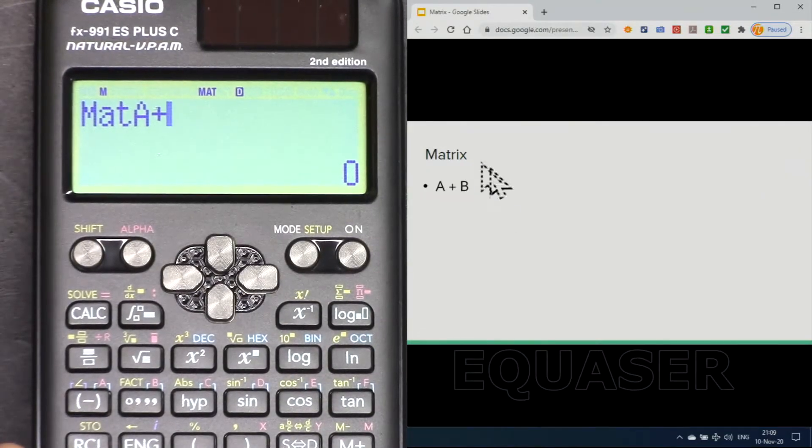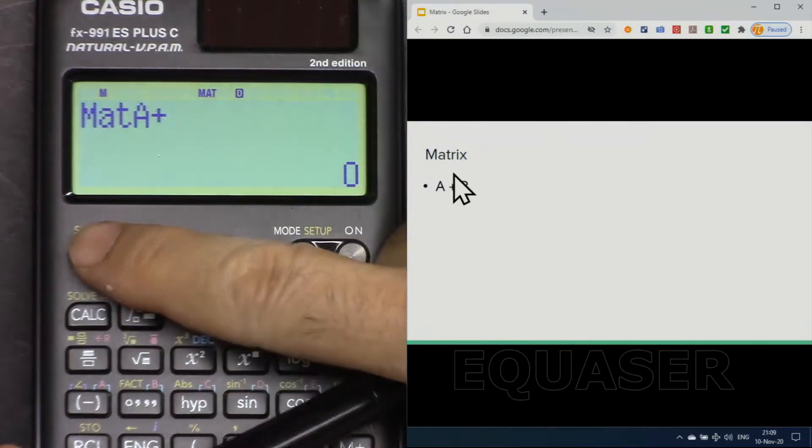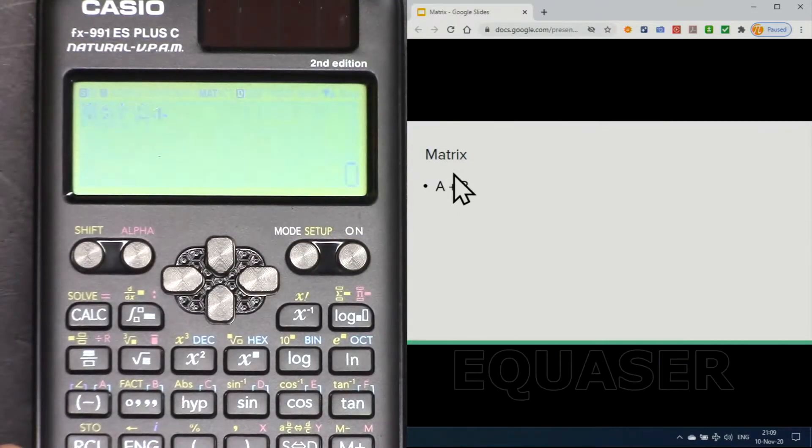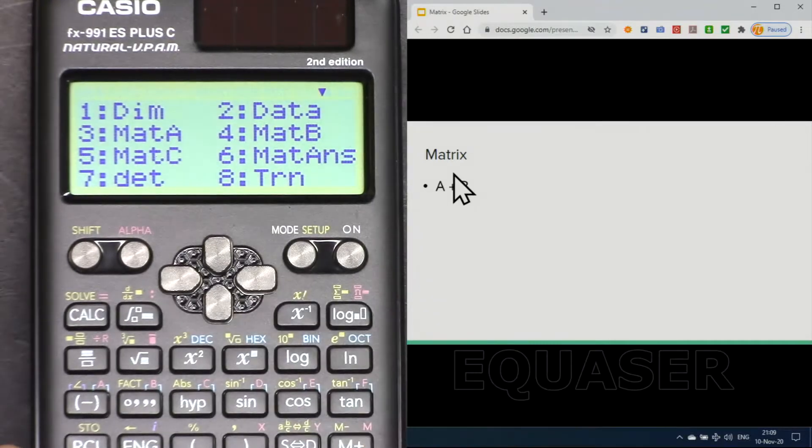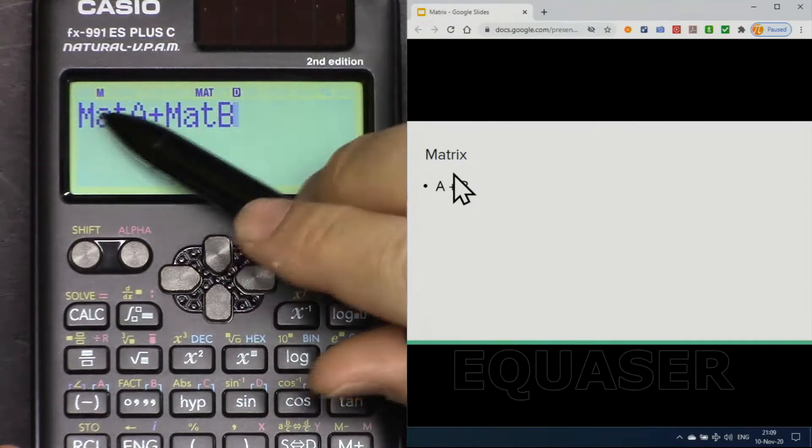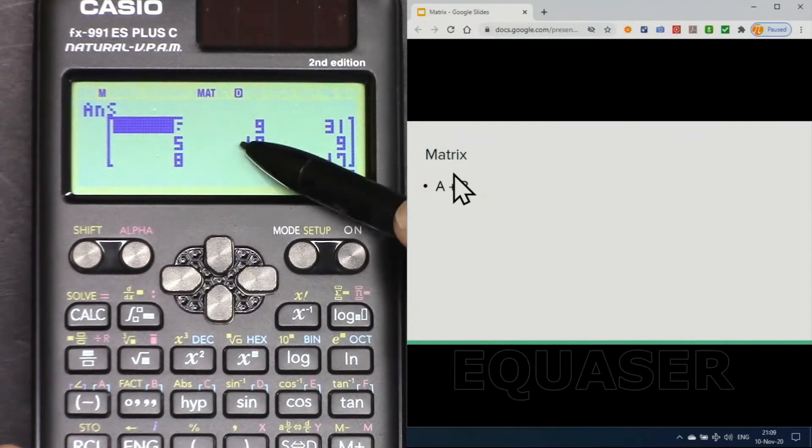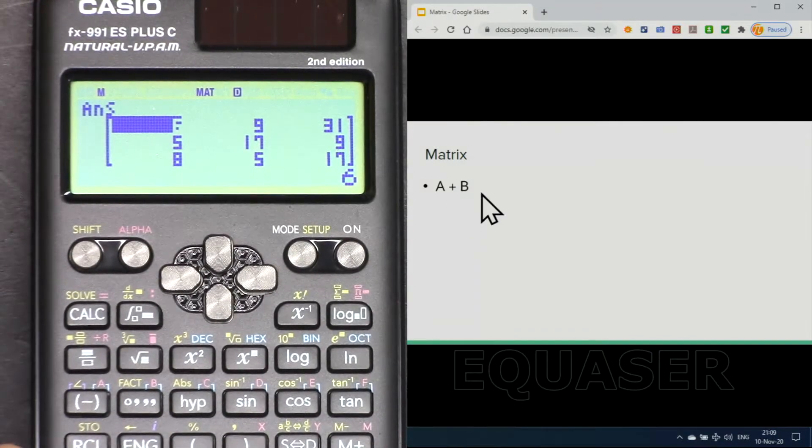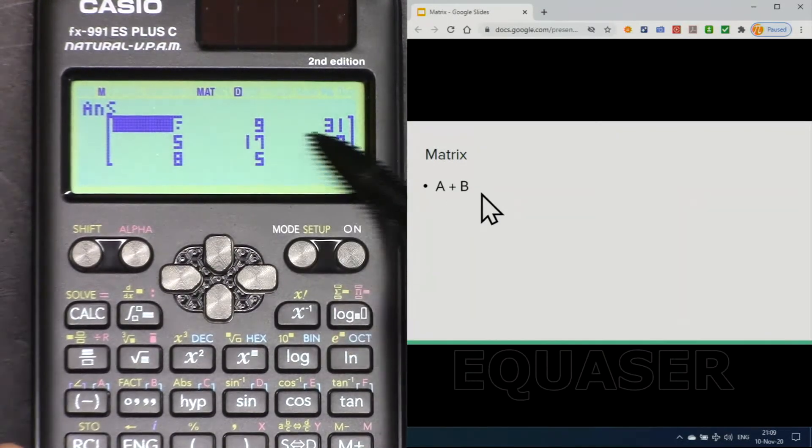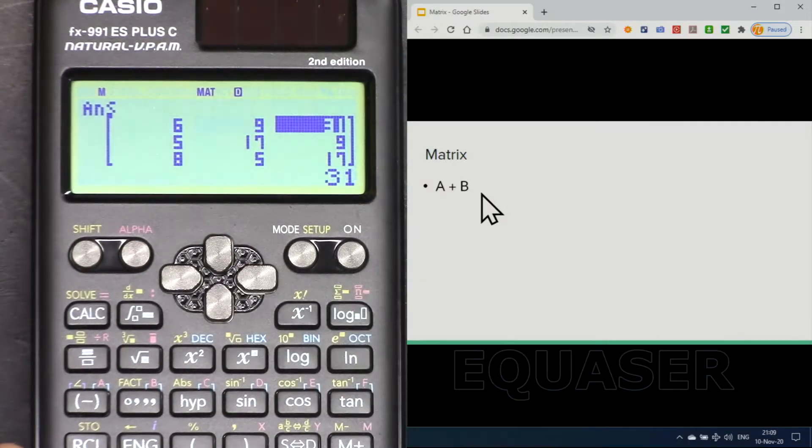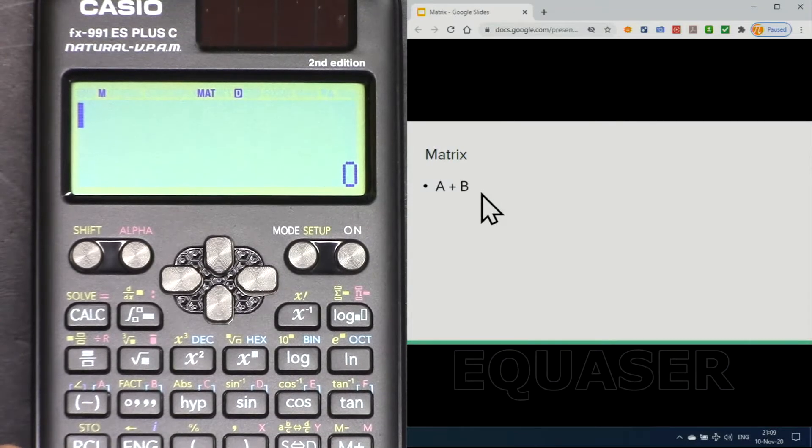Then plus for matrix B, we have to bring matrix B. Press shift matrix and then matrix B number 4. And now if I press equal sign, this is the result of addition of matrix A plus matrix B. If you cannot read the value, as before move the cursor to see it.